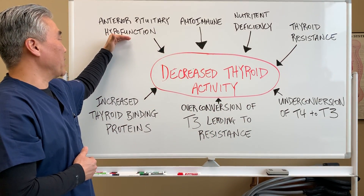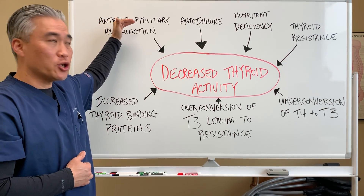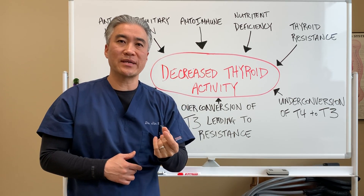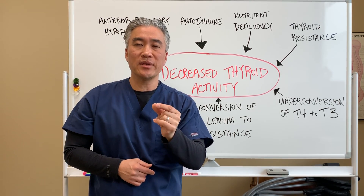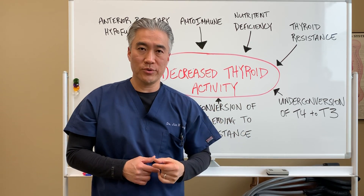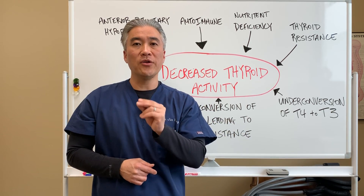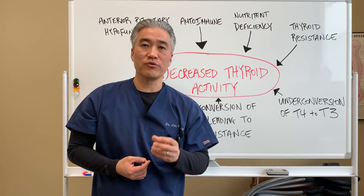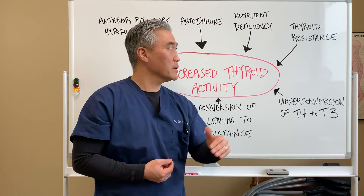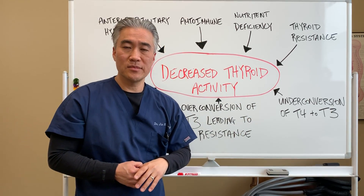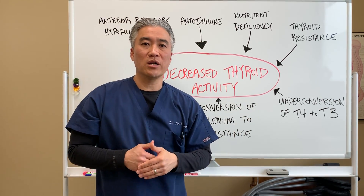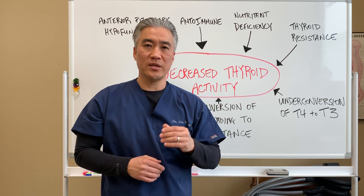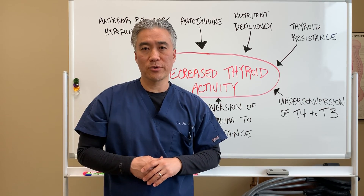A patient might come in and they have something called anterior pituitary hypofunction. Basically your pituitary gland releases hormones that stimulate the thyroid to produce thyroid hormones. Sometimes there is an under-functioning mechanism of that pituitary gland creating hypothyroid. Number two, autoimmune disease. Patients don't realize that the number one cause for hypothyroid or under-functioning thyroid here in the United States is an autoimmune disease process called Hashimoto's thyroiditis.